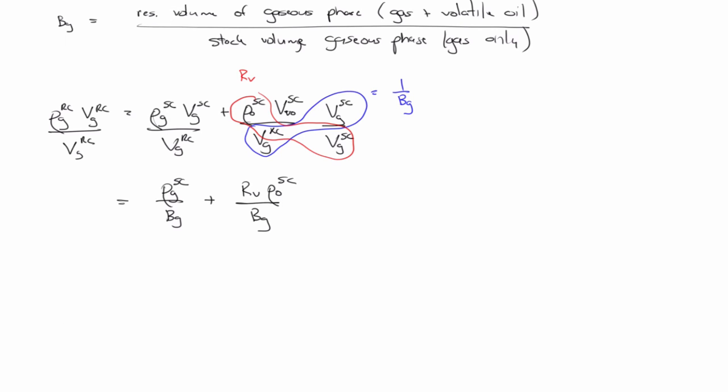And now we'll make the assumption that there is no volatilized gas, so Rv is equal to 0. There is no volatilized oil in the gas phase. So with that, then this just becomes the density of gas in the reservoir conditions.